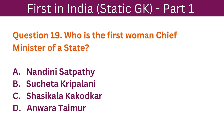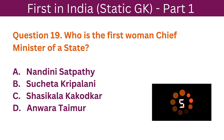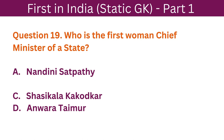Question 19: Who is the first woman Chief Minister of a State? A. Nandini Satpathi. B. Sucheta Kripalani. C. Shashikala Kakodkar. D. Anwara Taimur. The correct answer is B. Sucheta Kripalani.